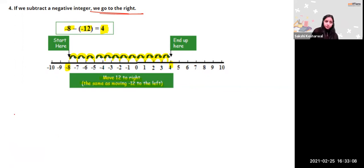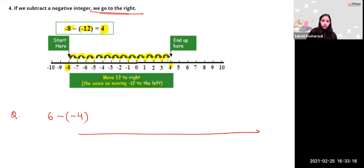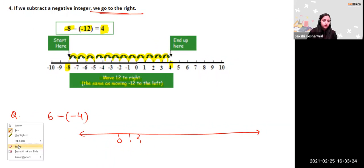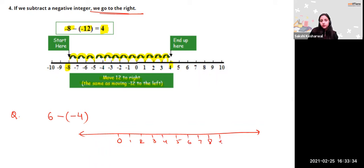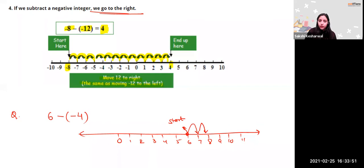One more example: 6 minus minus 4. Draw a number line. Start at 6. You are subtracting a negative integer, so move right. Move 4 steps to the right — one, two, three, four. Your answer is 10.